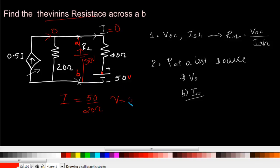We have V equal to 50 and I equal to 50 by 20. Now what is the Thevenin's resistance? It is nothing but 50 by 50 by 20. That is nothing but 20 ohm.